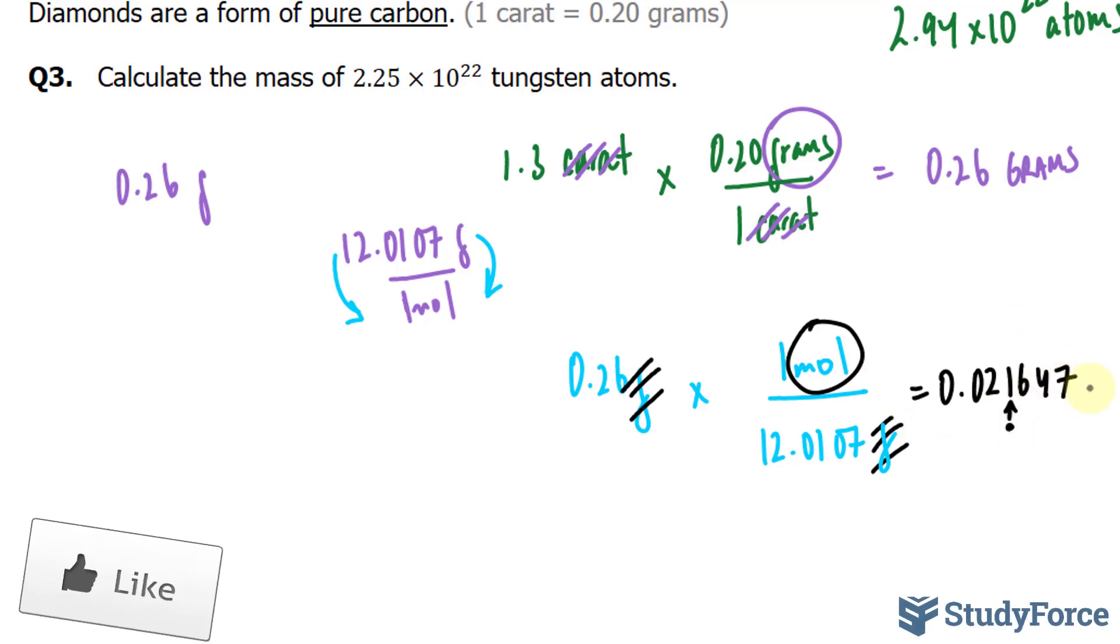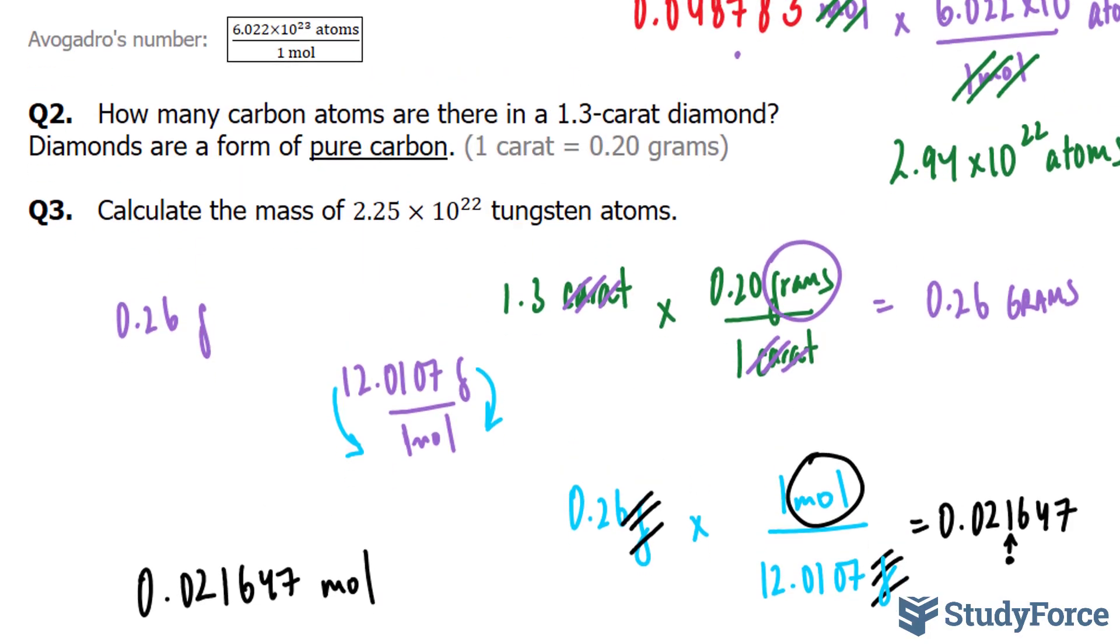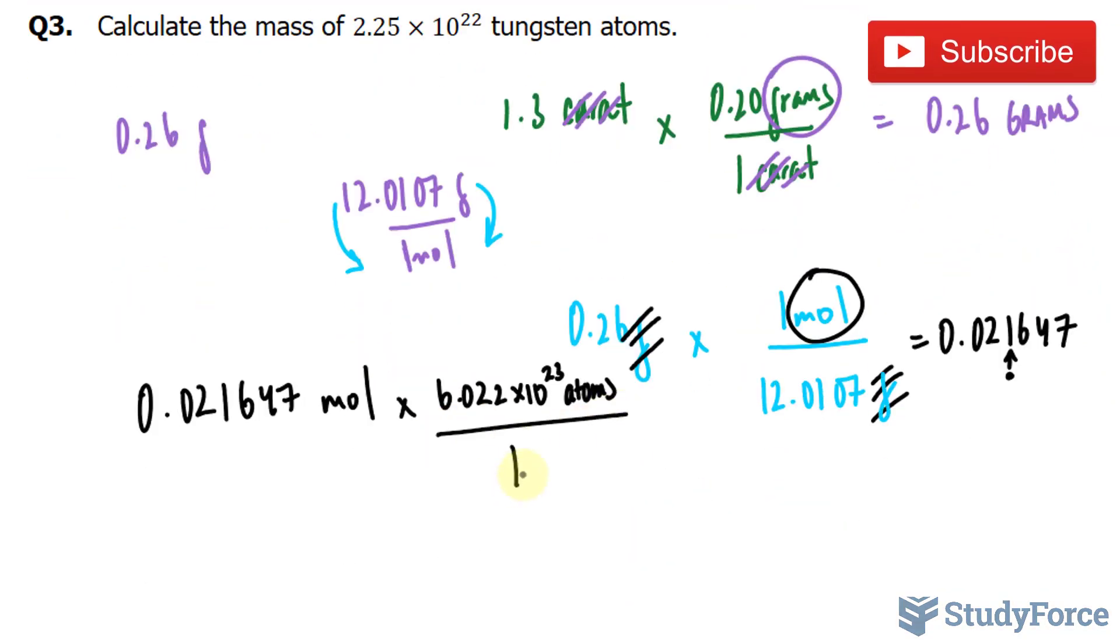So now, we will take this number, 0.021647 moles, and multiply it by Avogadro's number, which is shown right there. I don't need to flip this fraction, because if I multiply this number by this fraction as it is, I'll end up with the number of atoms, because the moles will cancel out. Let me show you. Multiplying this by 6.022 times 10 to the power of 23 atoms over 1 mole. The mole unit cancels out, just as suspected, leaving us with only atoms.